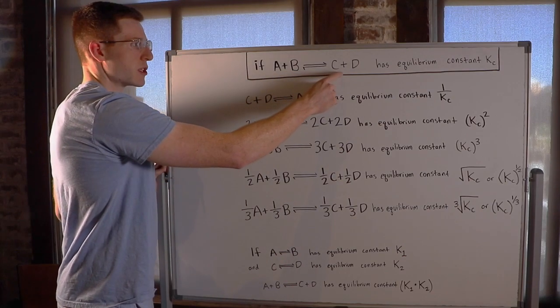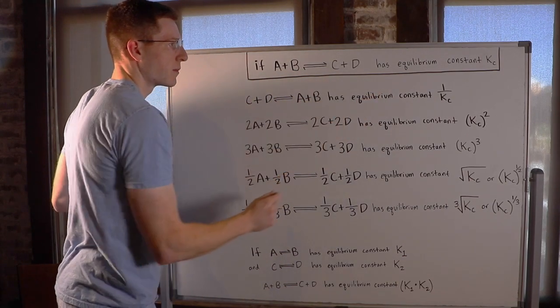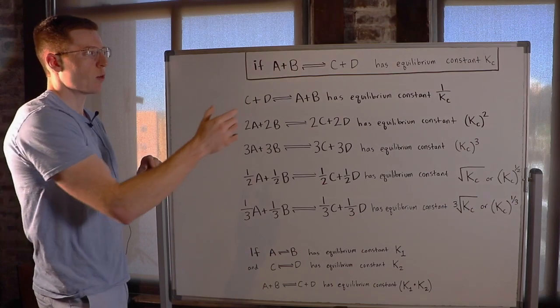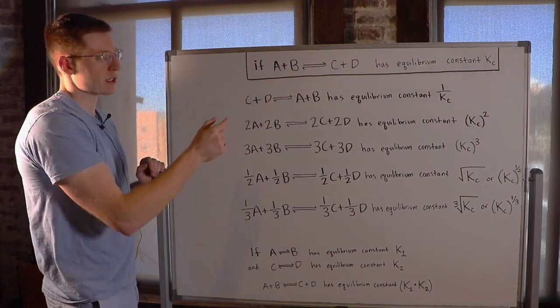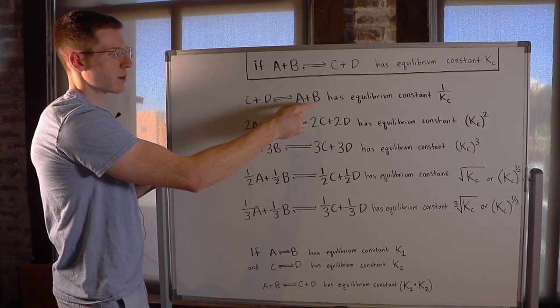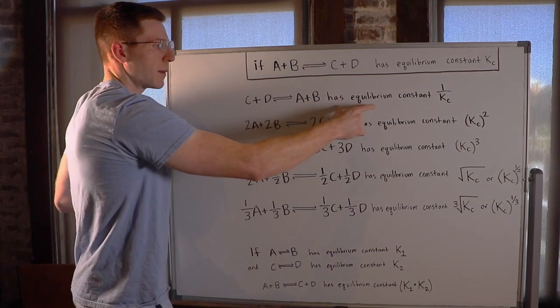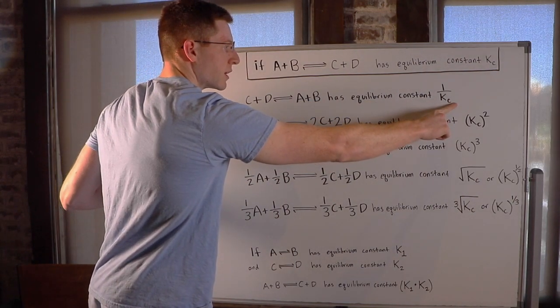If A plus B is in equilibrium with C plus D and has an equilibrium constant of KC, what would happen if we reversed that reaction so that C plus D is now in equilibrium with A plus B? Well, what happens to the equilibrium constant is we take the inverse of it.